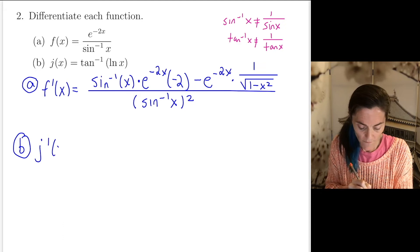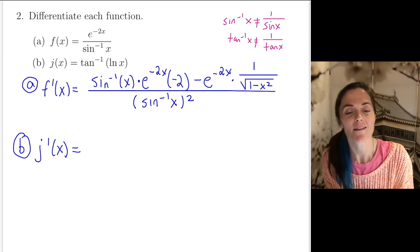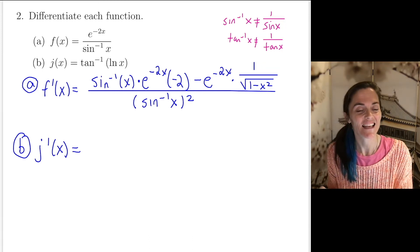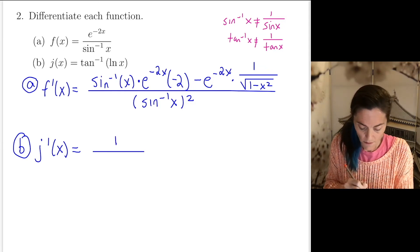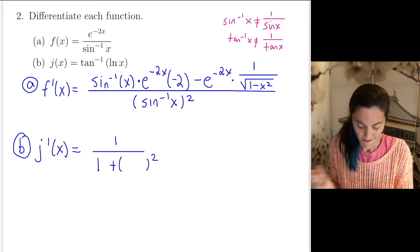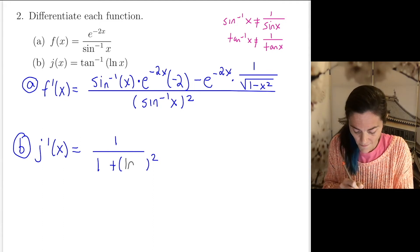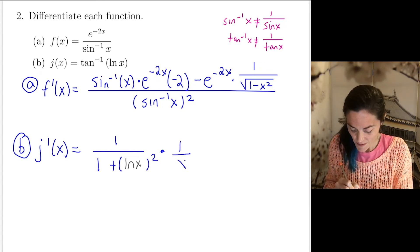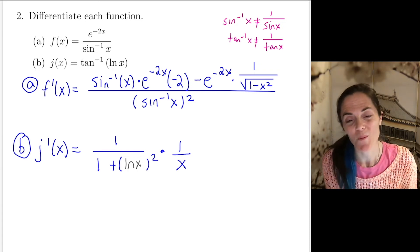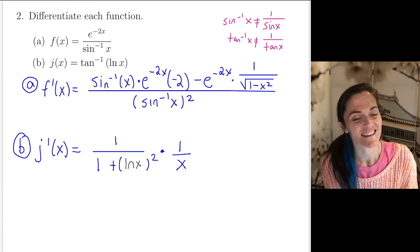We move on to b. We want j prime of x. This is chain rule. My inside function is the natural log. My outside function is tan inverse. So first you take the derivative of the outside, evaluated at the inside function, and then multiply by derivative of the inside function. As we have been practicing for multiple weeks, the derivative of natural log is 1 over x. And so this is j prime of x, letter b.